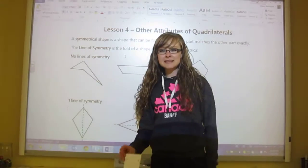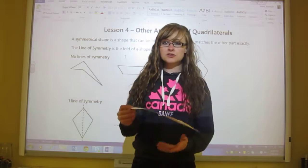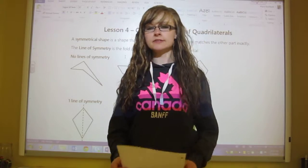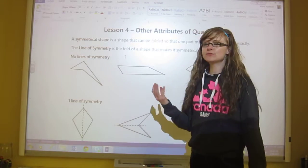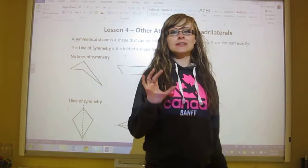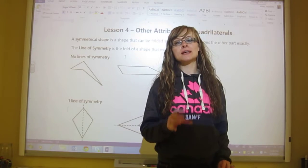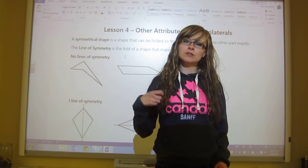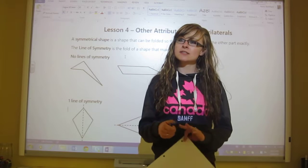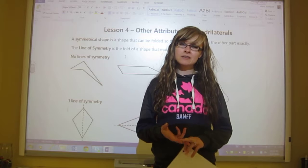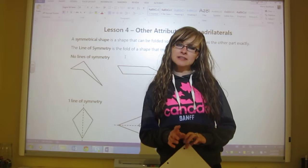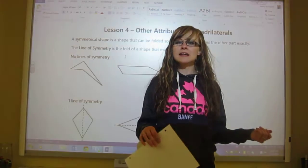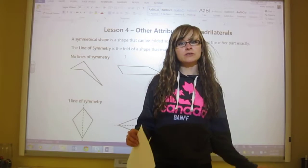Hello and welcome to lesson four, other attributes of quadrilaterals. Okay, so we've looked at quadrilaterals, we've looked at the types of quadrilaterals that there are and we should be able to identify them now. We've looked at things such as squares, rectangles, kites, trapezoids, parallelograms and then unidentifiable just quadrilaterals.